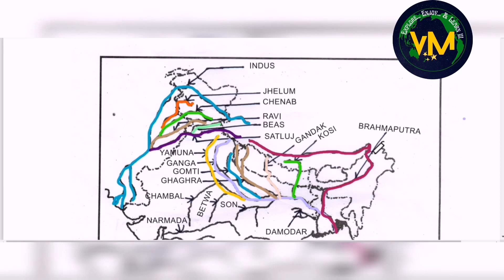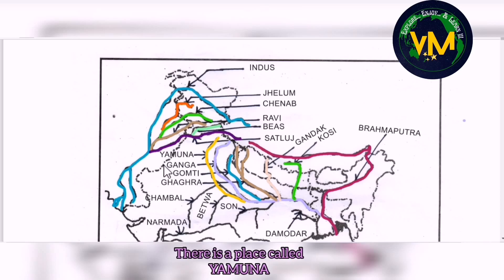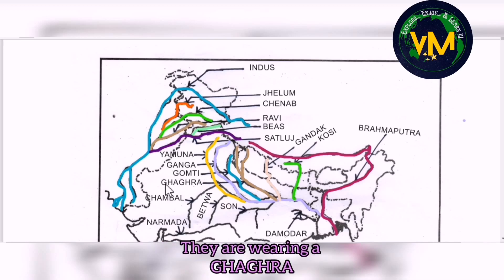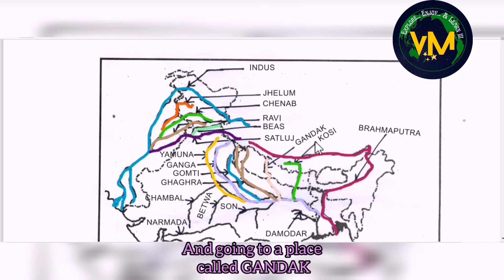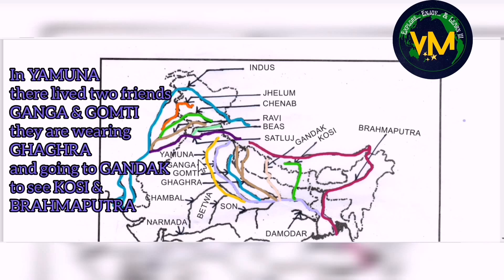The arrow should be marked only inside the Indian boundary for River Brahmaputra. To remember Ganga's tributaries, remember this story: There is a place called Yamuna where lived two friends Ganga and Gomti. They are wearing a Gagra and they are going to Gandak to see Kosi and Brahmaputra. Remember it in this order: Yamuna, Ganga, Gomti, Gagra (Ghaghra), Gandak, Kosi, Brahmaputra.